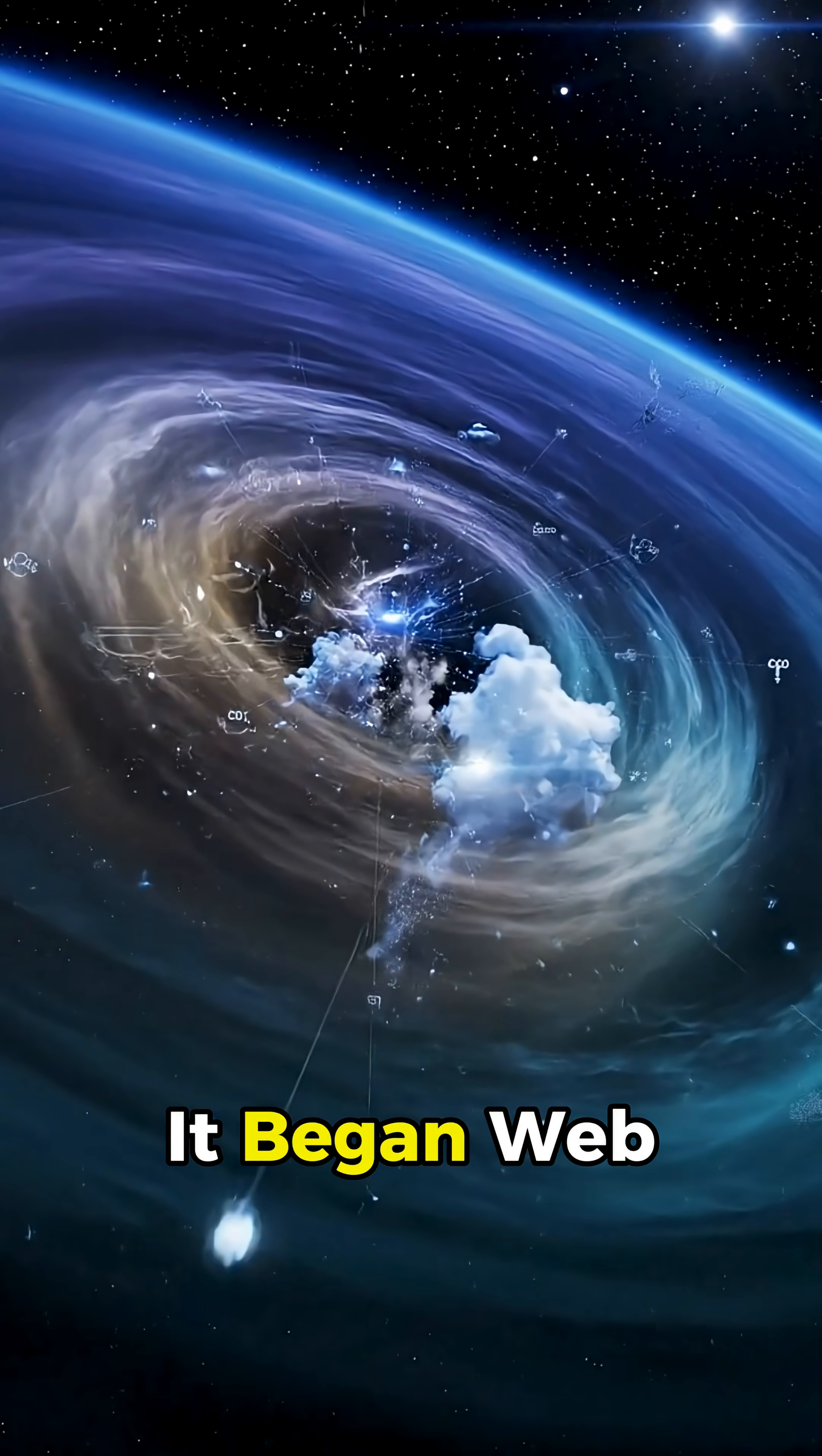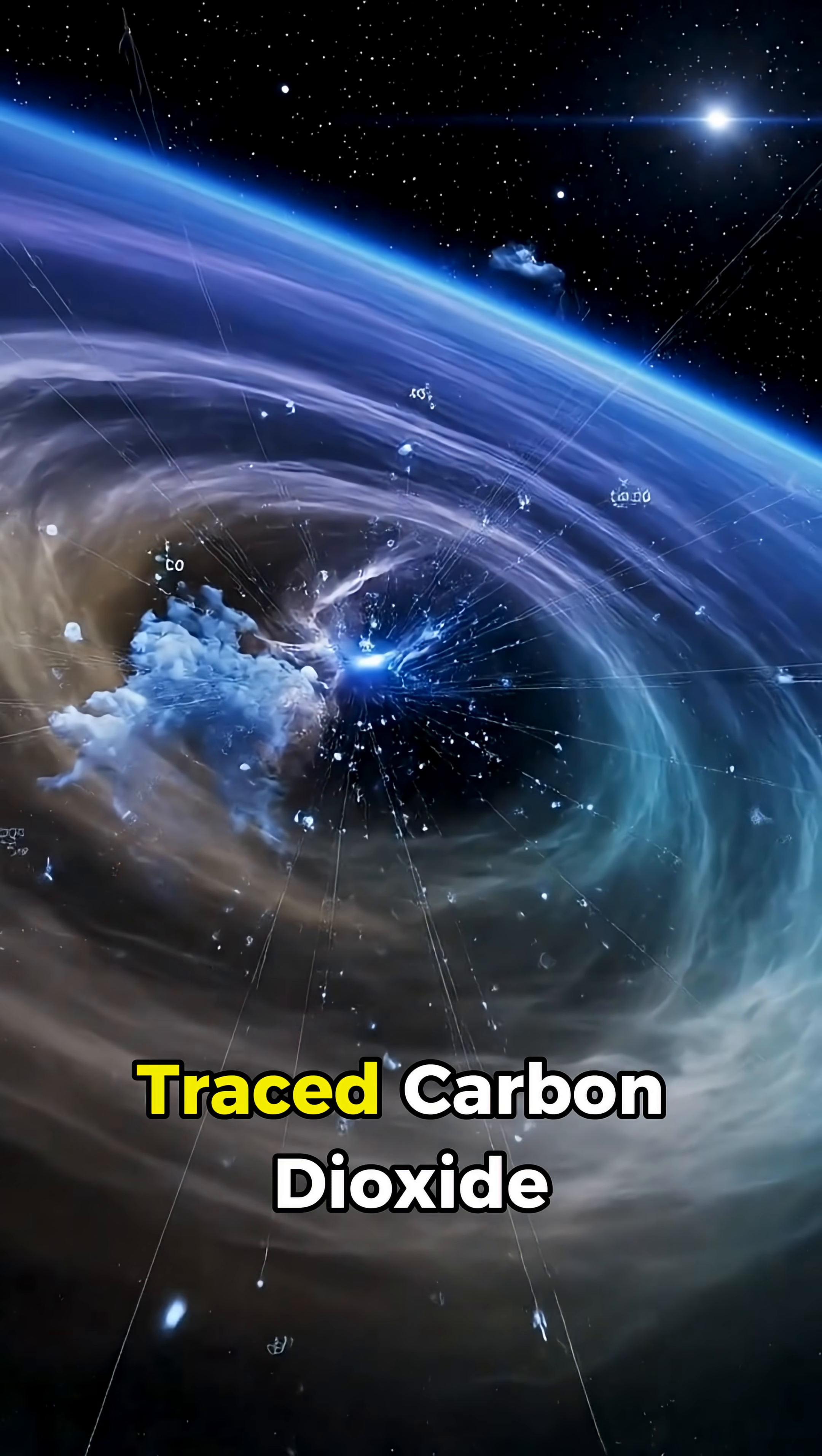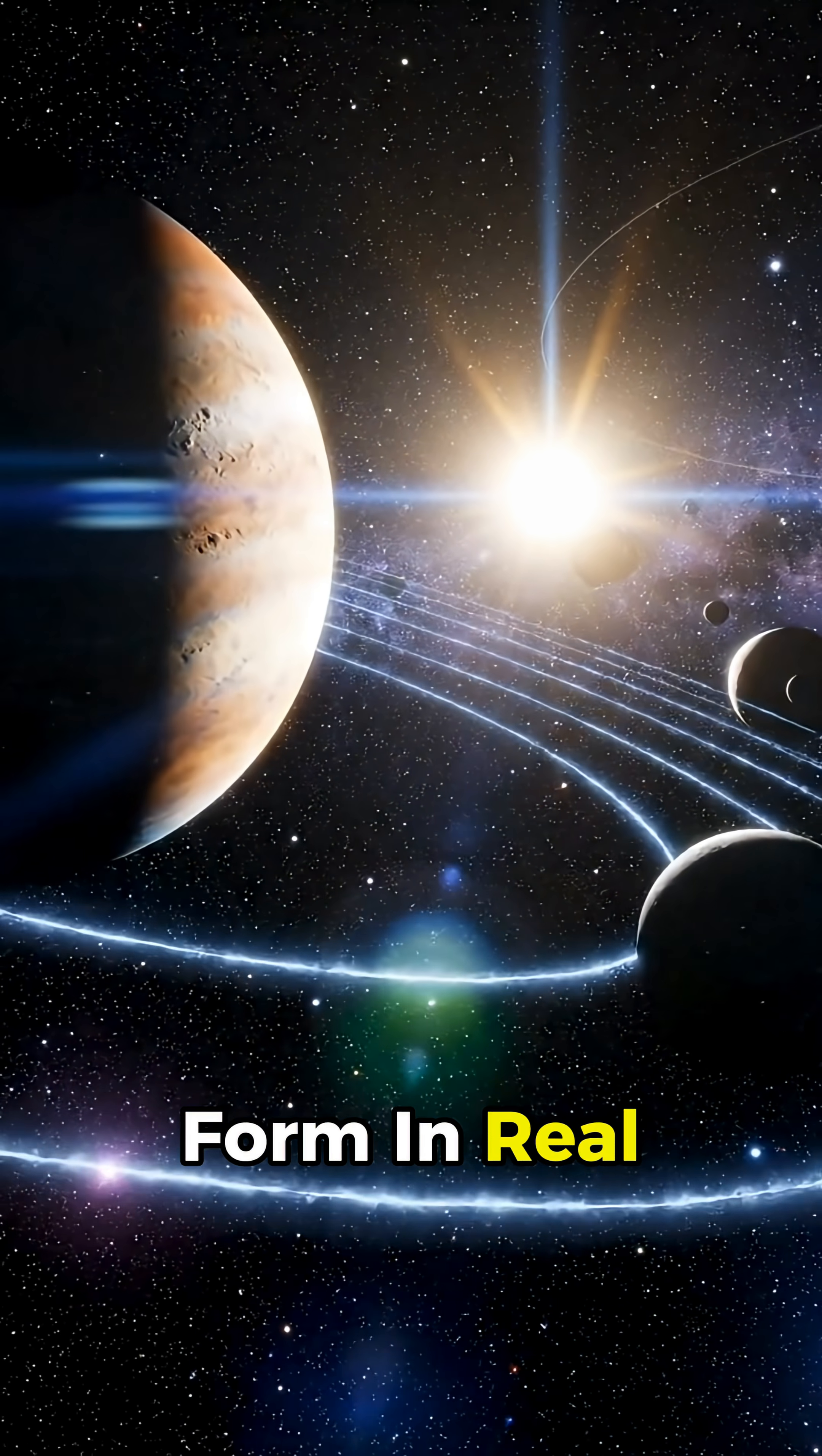this is how it began. Webb found water vapors swirling in the atmosphere of distant exoplanets, traced carbon dioxide drifting around alien worlds, and watched planets form in real time,